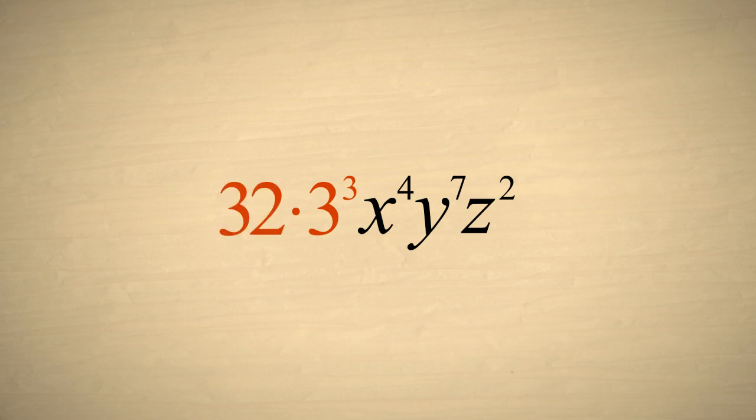Two to the fifth is thirty-two, and three cubed is twenty-seven, and thirty-two times twenty-seven is eight hundred sixty-four.